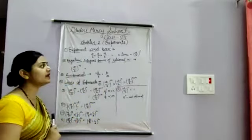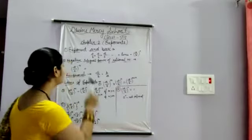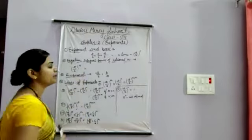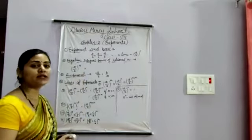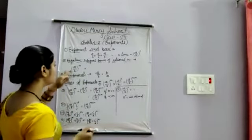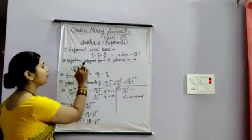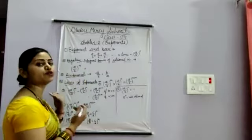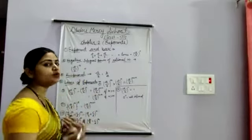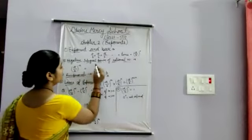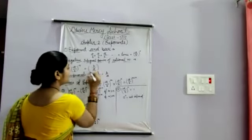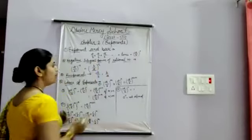The second concept is the negative integral power of a rational number. Suppose we have any rational number A upon B to the power minus n. To evaluate this, we take the base A upon B and change numerator to denominator and denominator to numerator — that means we write B upon A.